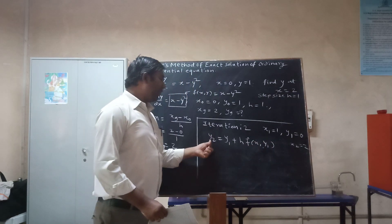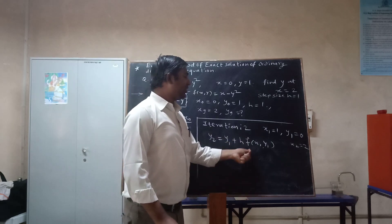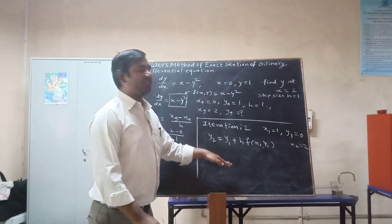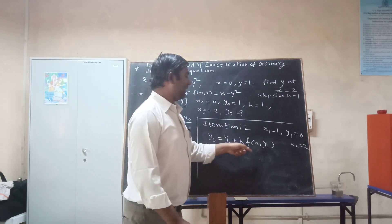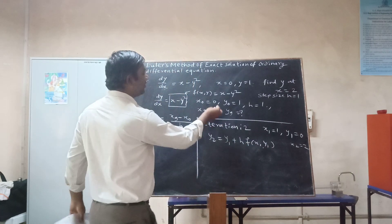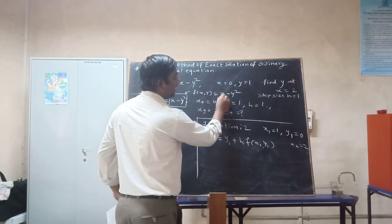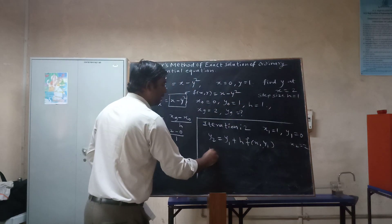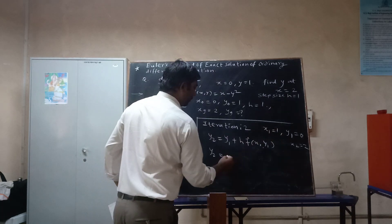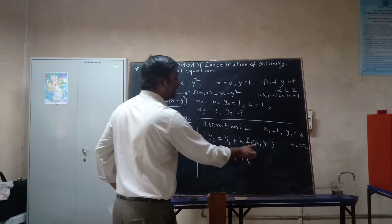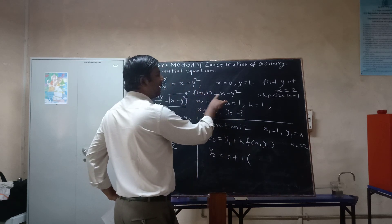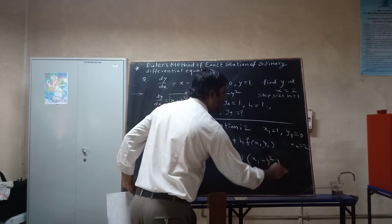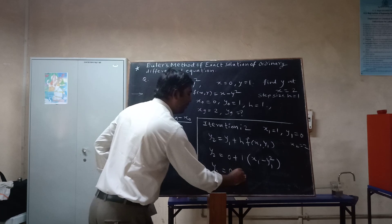The formula for the second iteration is y₂ = y₁ + h · f(x₁, y₁). Previously y₁ = y₀ + h · f(x₀, y₀); now iteratively, y₂ = y₁ + h · f(x₁, y₁). Substituting f(x,y) = x minus y squared, we get f(x₁, y₁) = x₁ minus y₁ squared. So y₂ = 0 + 1 · (1 minus 0 squared).